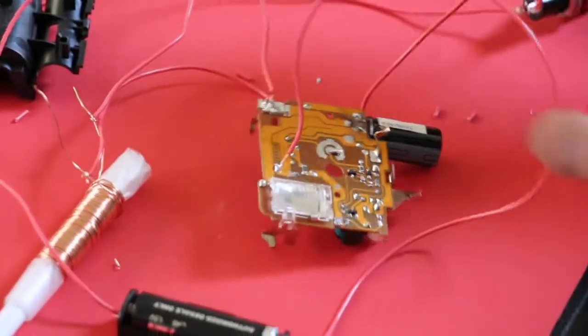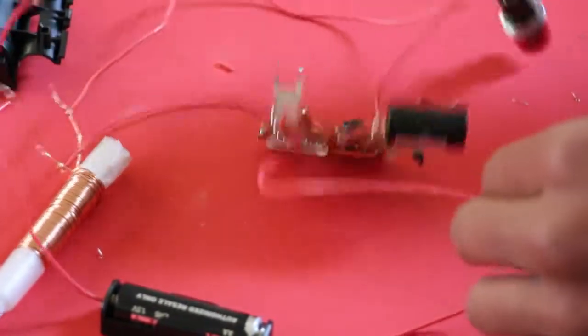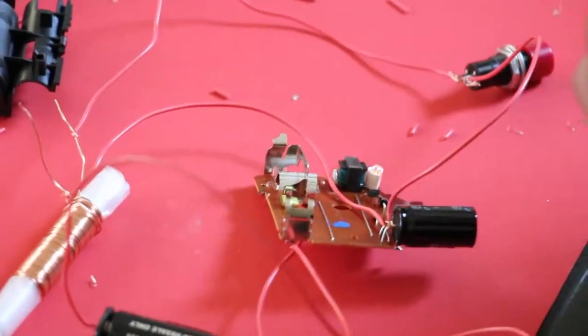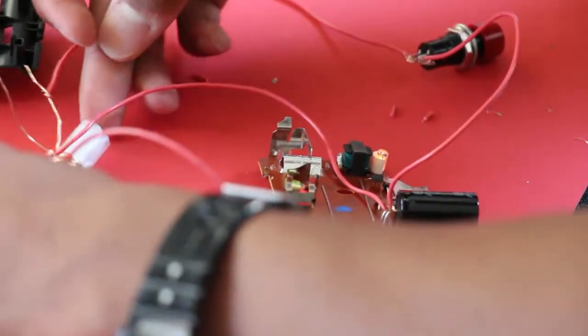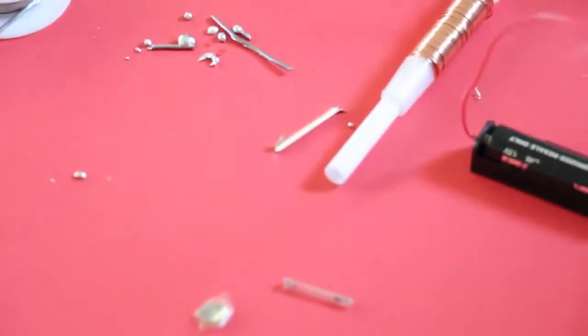But if you flip the chip over, the light's on and that means it's fully charged. And we can load in our projectile and give it a shot.